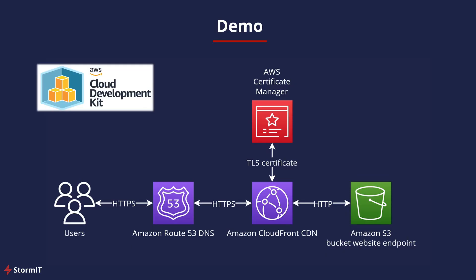Here we have our simplified diagram. We have a static website in an S3 bucket, CloudFront as a CDN, and a certificate in ACM. We will also use Route53 as a DNS with our custom domain. If you are interested in deploying this type of architecture via the AWS Management Console, we have a different video for this. By the end of this tutorial, you will have a good understanding of how to use CDK to automate the deployment of your website on AWS and how to secure it with HTTPS.